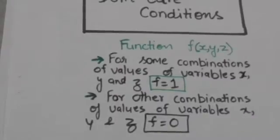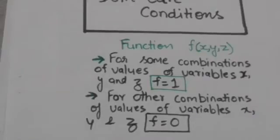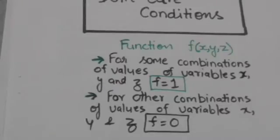But there are functions for which it is assumed that certain combinations of values of the variables involved will never occur. For these combinations, the function can neither be zero nor one, and a digital circuit which implements such functions operates under the assumption that these input combinations will never occur. So we don't care for such combinations of values of variables.